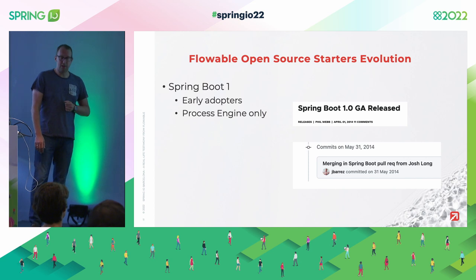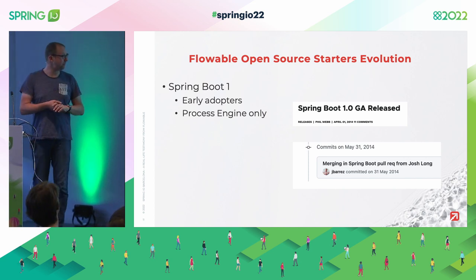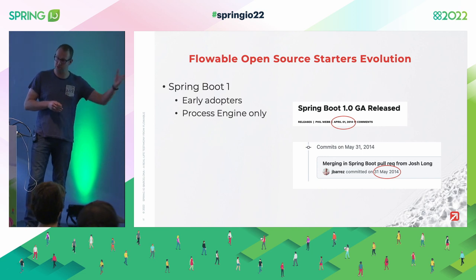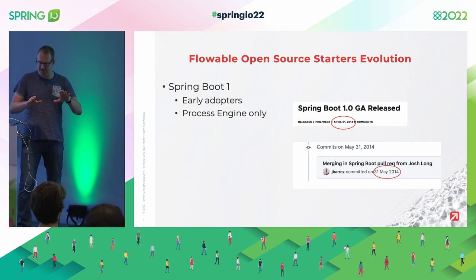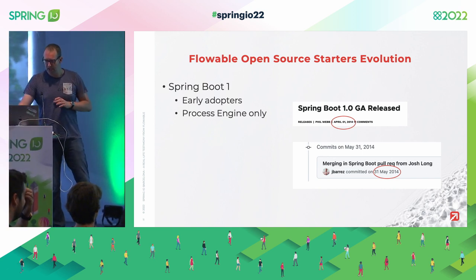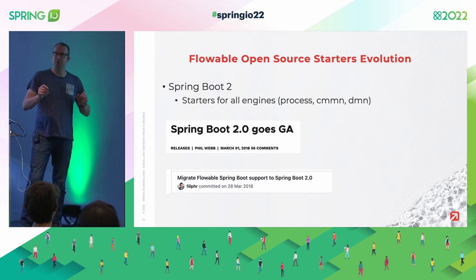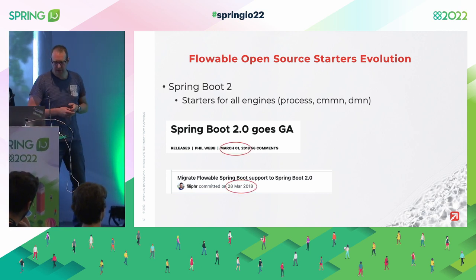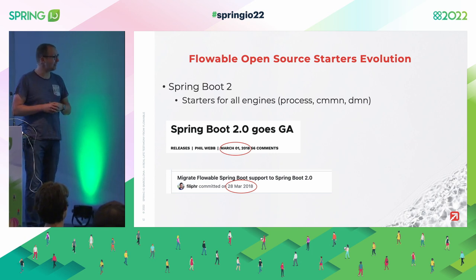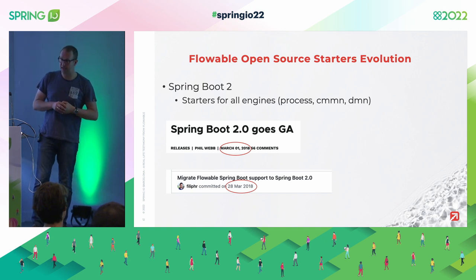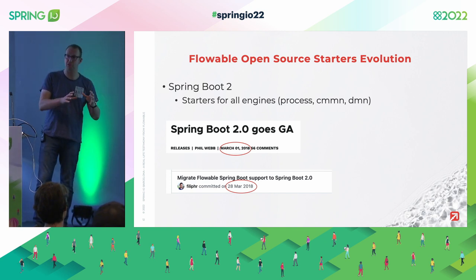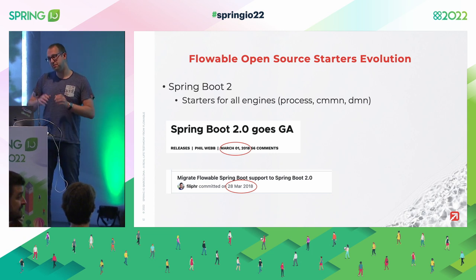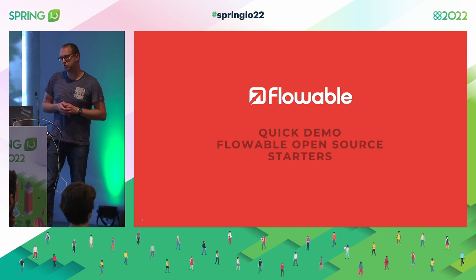We were quite early adopters. When Spring Boot 1 was released on April 1st, 2014, it only took us less than two months to add the first integration — thanks to nobody else than Josh Long. At that time, support was limited; we only had the process engine. For Spring Boot 2.0, we added starters for all the engines and were even faster. Philip migrated everything to Spring Boot 2.0 less than a month after it was released, expanding all the starters from just the process engine to all the engines. That was important because in March 2018 we were already building our enterprise product.